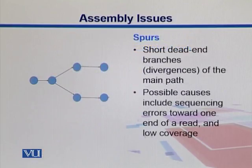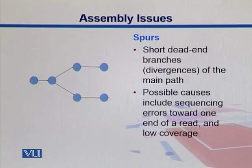Spurs are short dead-end branches, a divergence of the main path. So you start from somewhere and then you are diverged. What are the possible causes? There might be sequencing errors towards one end of the read, and maybe it's because of the low coverage.